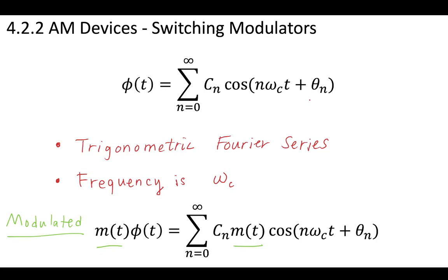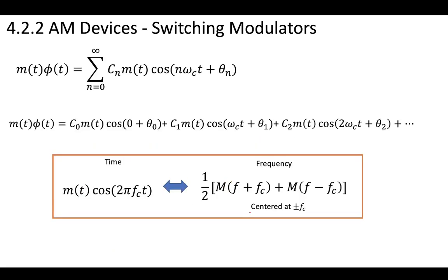Now, if you were to modulate this, the modulation of some trigonometric Fourier series would simply introduce this m(t) term. If we were to expand this and start writing out the terms — n first equal to zero, then one, two, and so on up until n equals infinity — we would get this. So first we have one term, then a second term, then a third term, and we're starting to see there are now quite a few different waves.